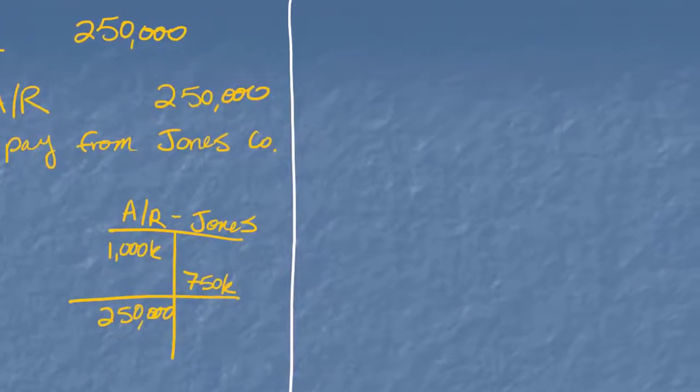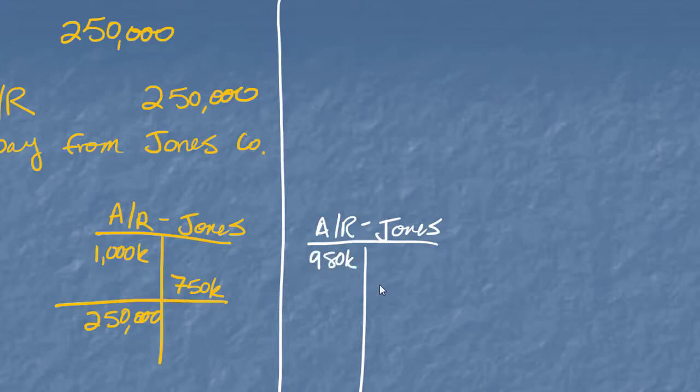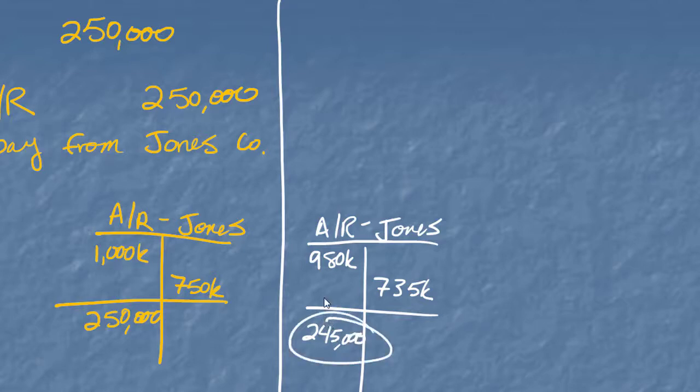For the net method, it's a little bit different. I started with $980,000, and we recorded that they paid off $735,000. So according to this, they owe me $245,000 according to this. But because of the contract, they're not going to pay $245,000. They're going to pay the full $250,000. So cash will be $250,000.